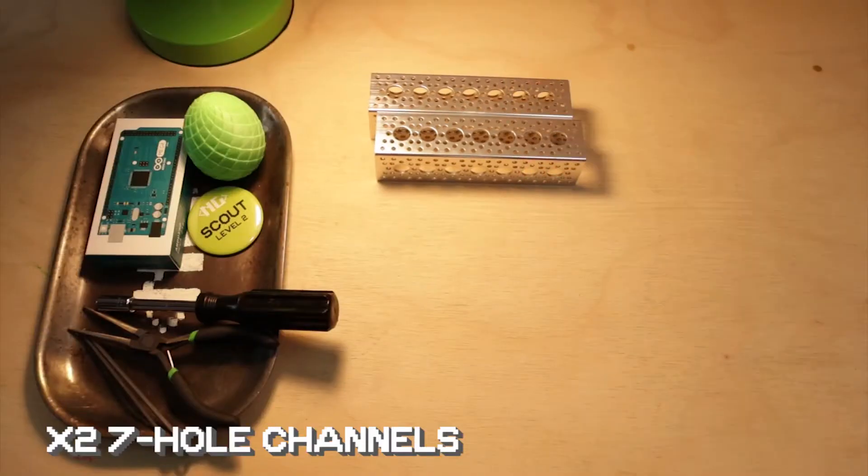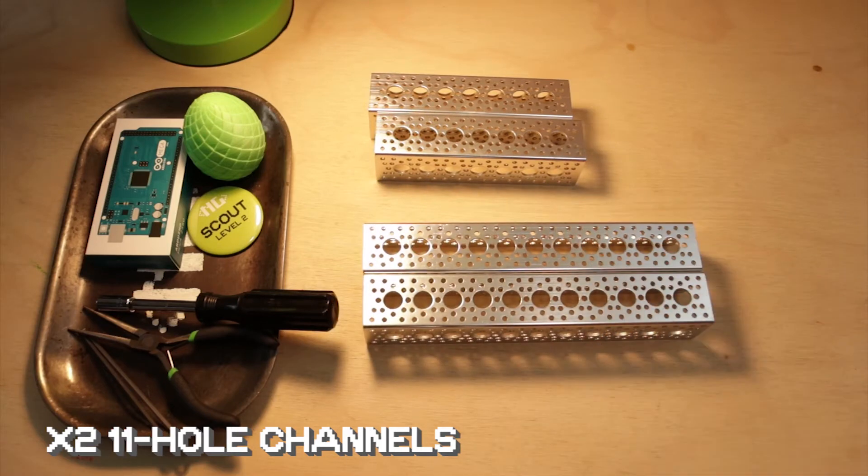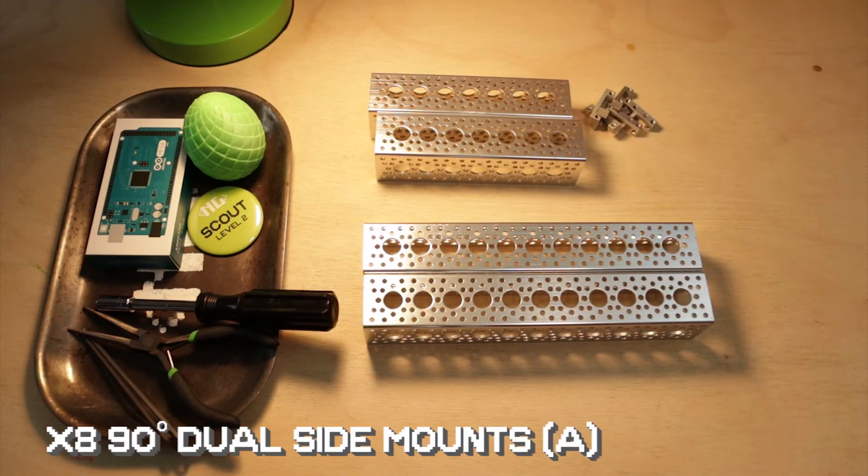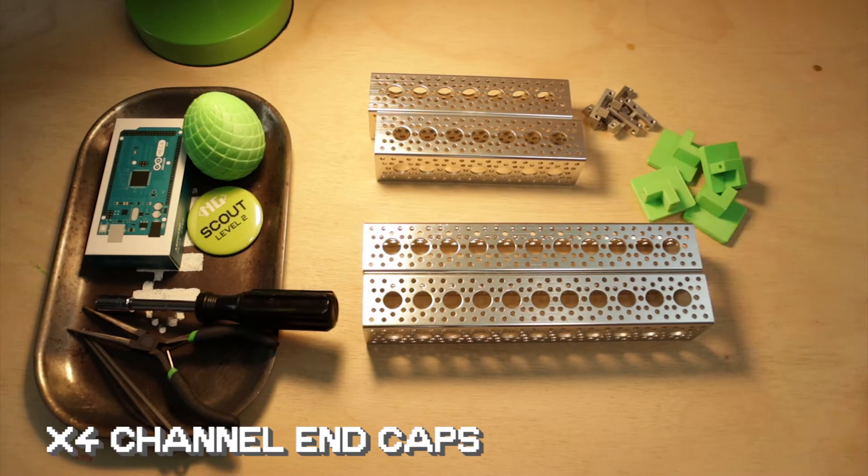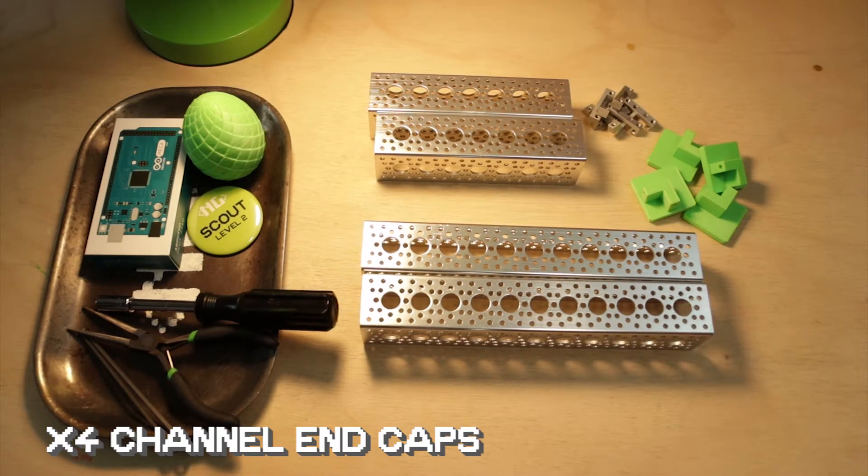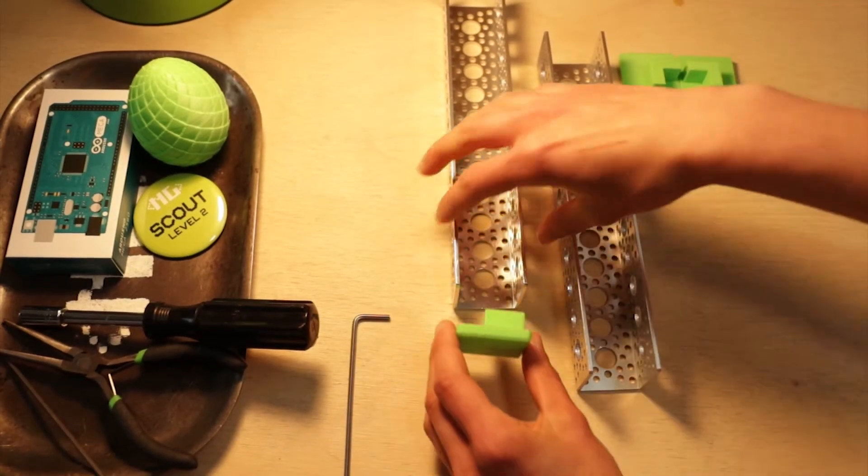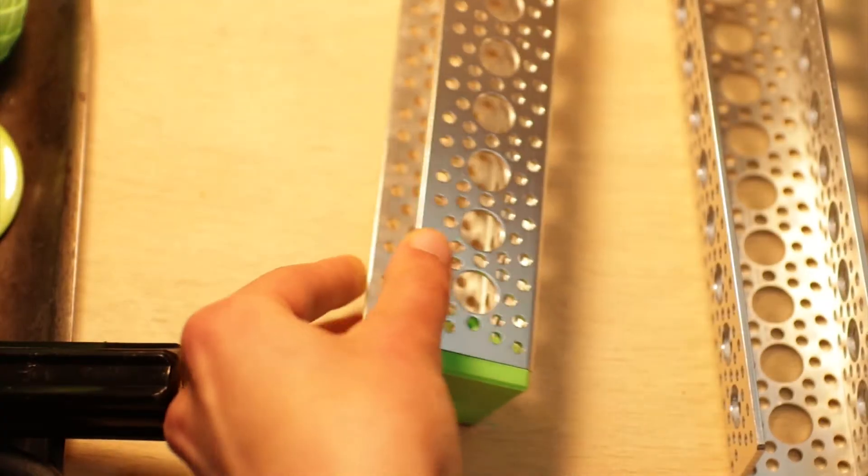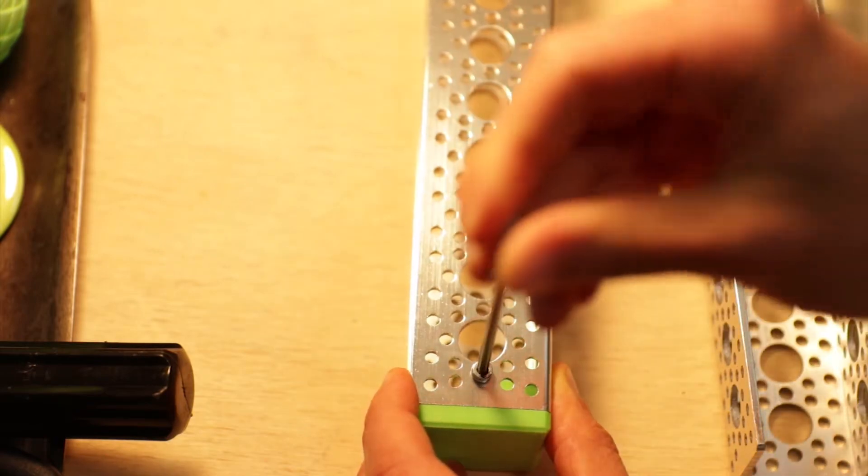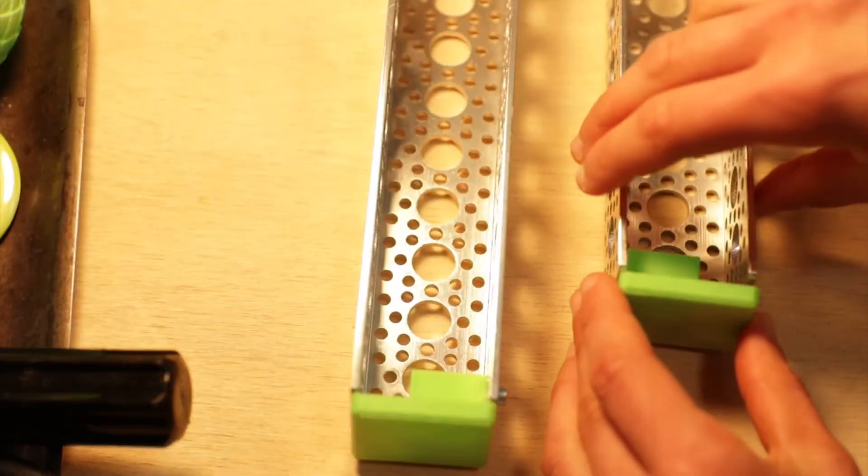Step one. You're gonna grab two seven-hole channels, two eleven-hole channels, eight 90-degree type-A dual side mounts, four 3D printed channel end caps created by Benin3D on Thingiverse, and 40 quarter-inch screws. You're gonna start by screwing the end caps onto the ends of your eleven-hole channels. I'll have a link to the creator of this 3D print file in the description if you want to print some for yourself.